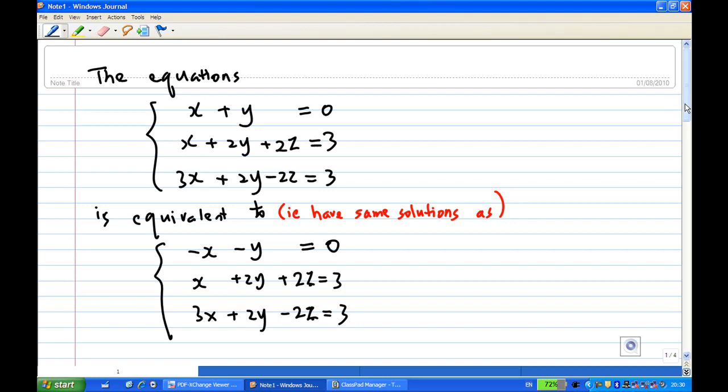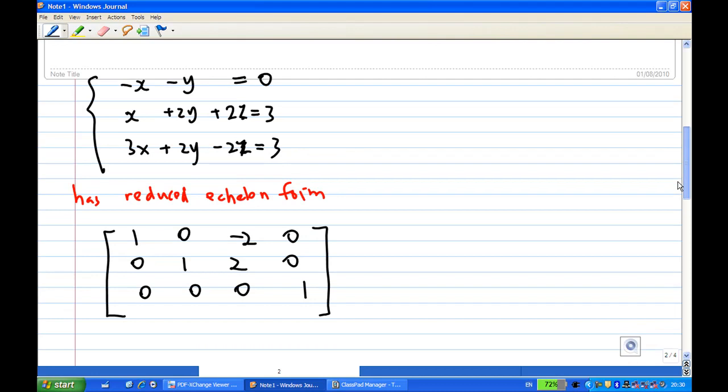And based on this, we know that this system of equations has a row-reduced form: [1, 0, -2, 0], [0, 1, 2, 0], and [0, 0, 0, 1].